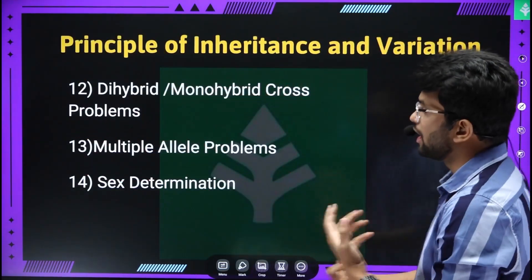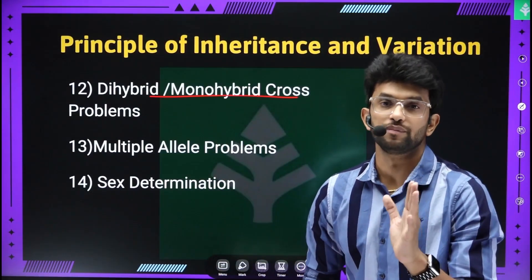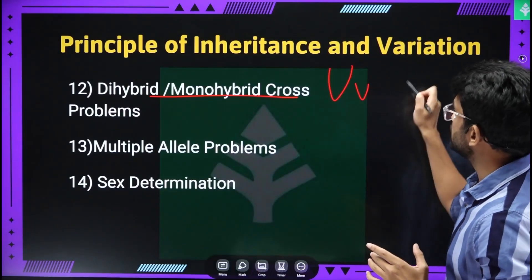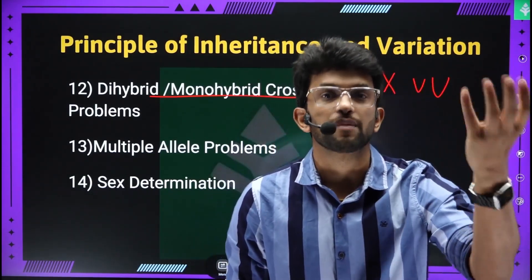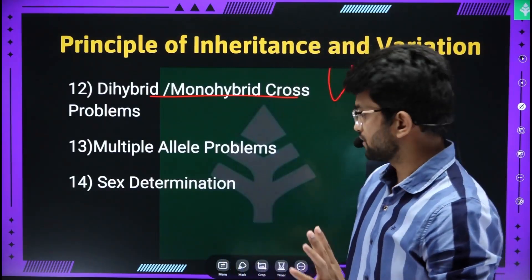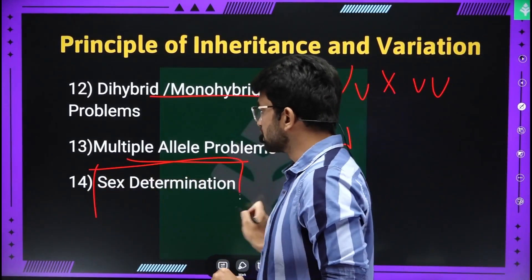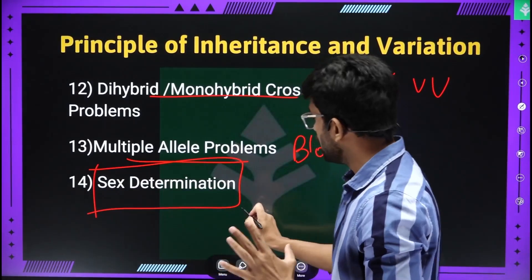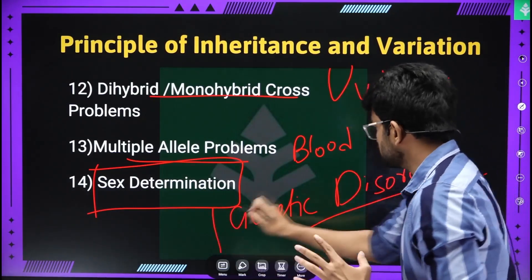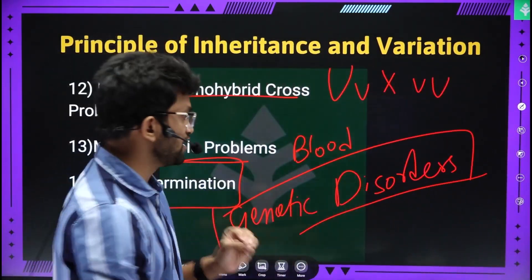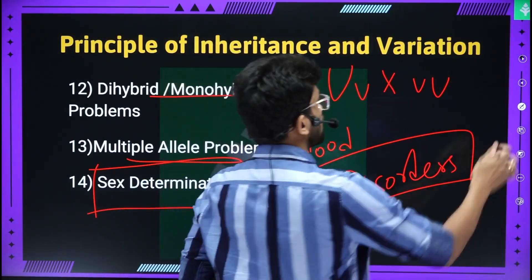Let's talk about genetics — the principles of genetics. Di-hybrid and mono-hybrid cross problems: capital V, small V — what kind of offspring do you breed? Physical characteristics, phenotype, genotype, genetic makeup. Multiple allele problems — blood groups. Then sex determination — very important. Genetic disorders are also very important topics.